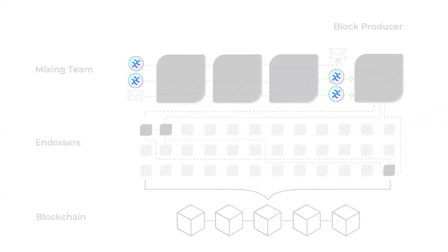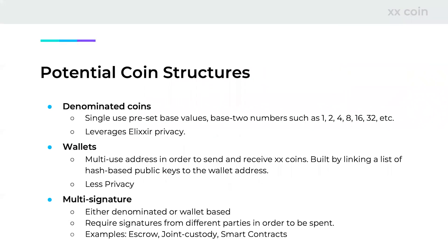We're going to talk about the currency component of that overview diagram we saw. When coming up with the system, we identified three potential coin structures. The first is denominated coins — the most similar to physical cash, but instead of five or ten dollars we use base-two numbers: one, two, four, and we also support fractions. These take full advantage of the Elixxir privacy mixnet, which pairs perfectly with the denominated coins designed for the platform.